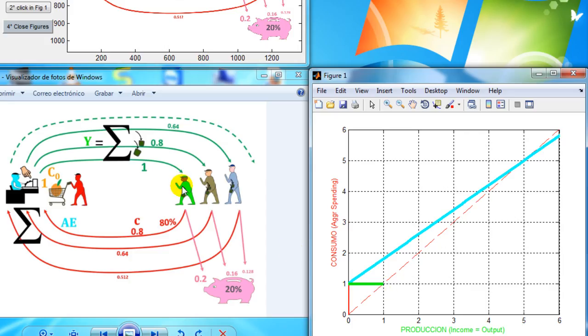Then this green guy consumes only 0.8, which is this 0.8. And then this 0.8 comes to this guy, and this guy only consumes 0.64, which is this, and so on.